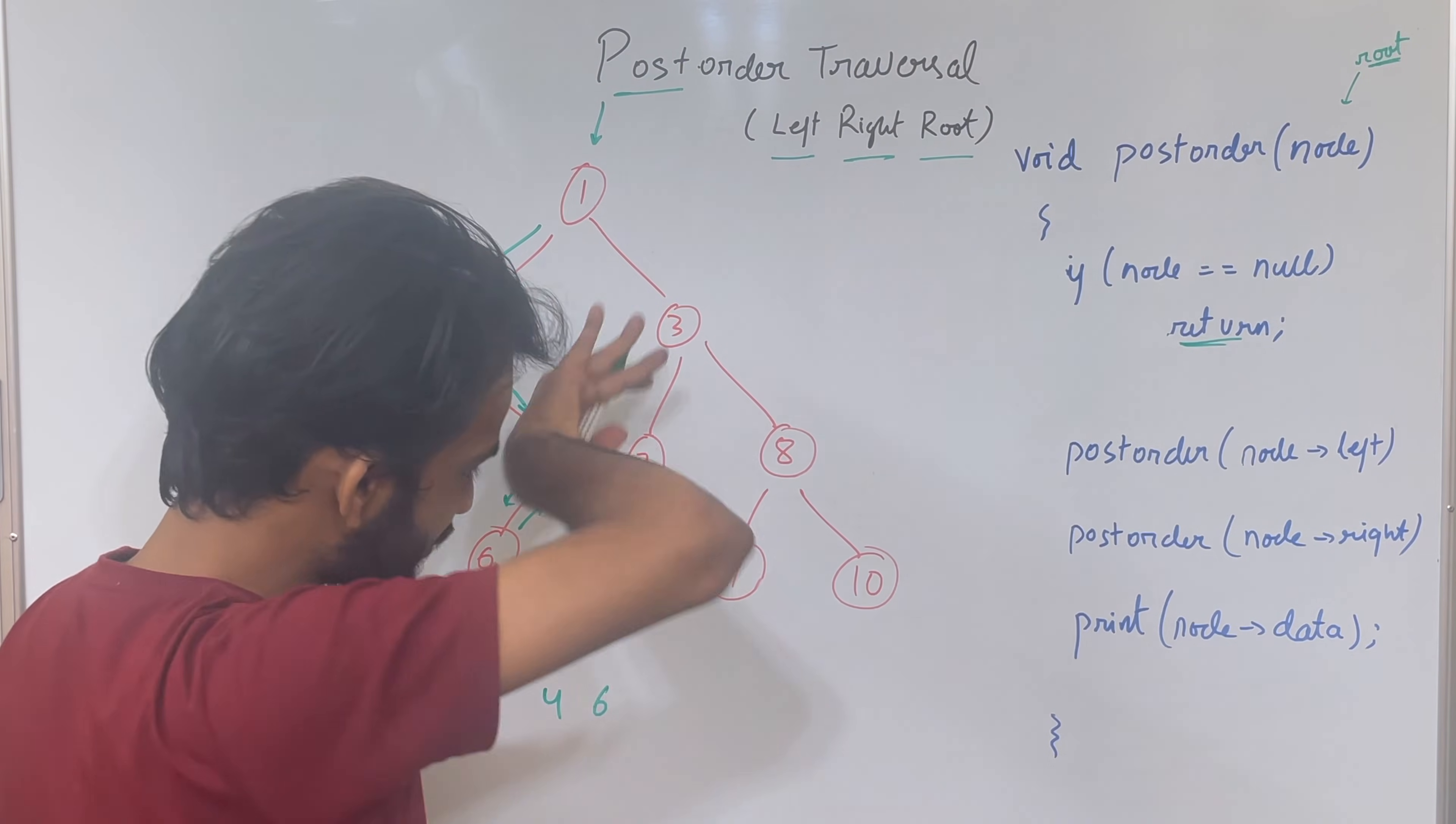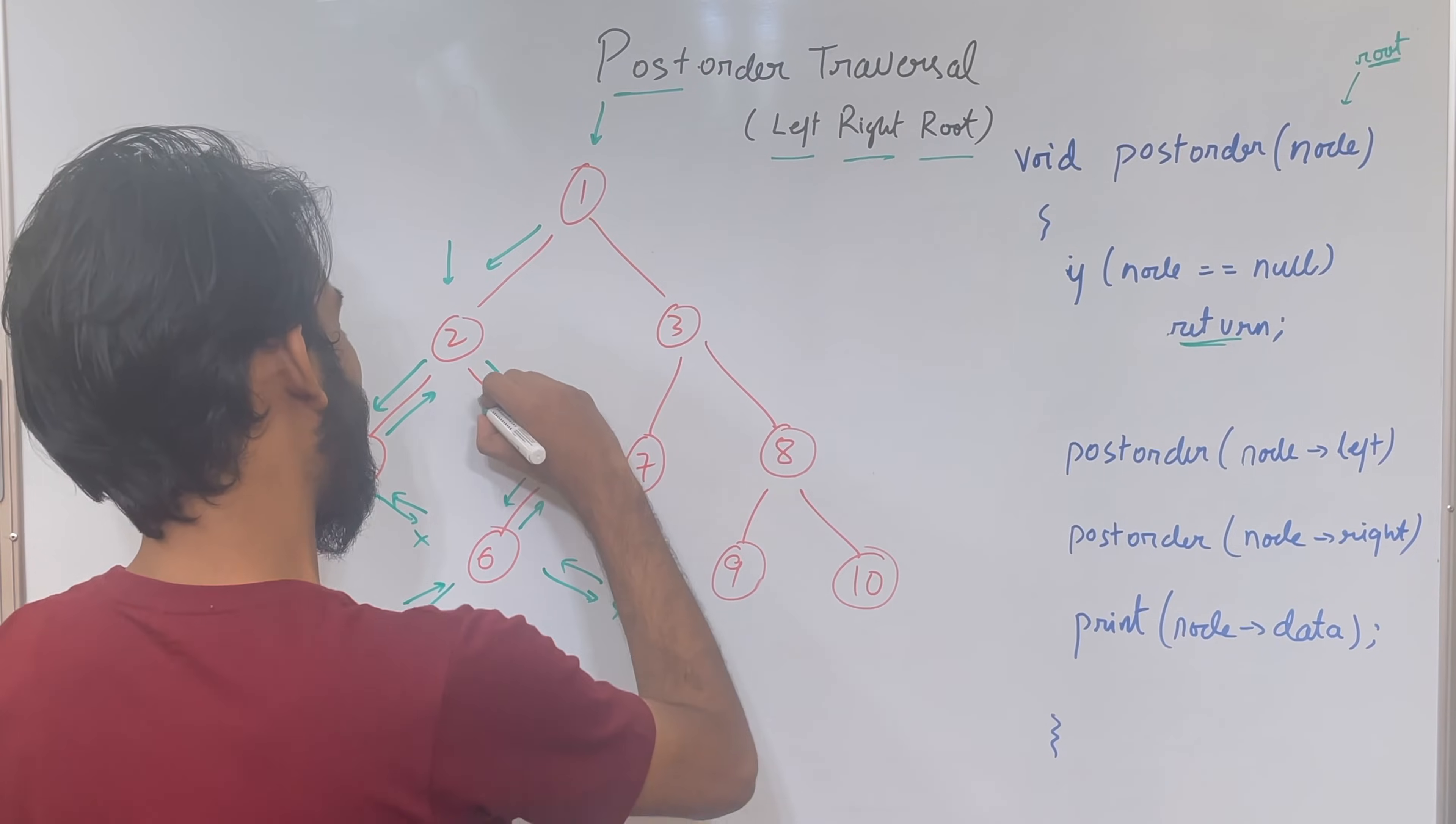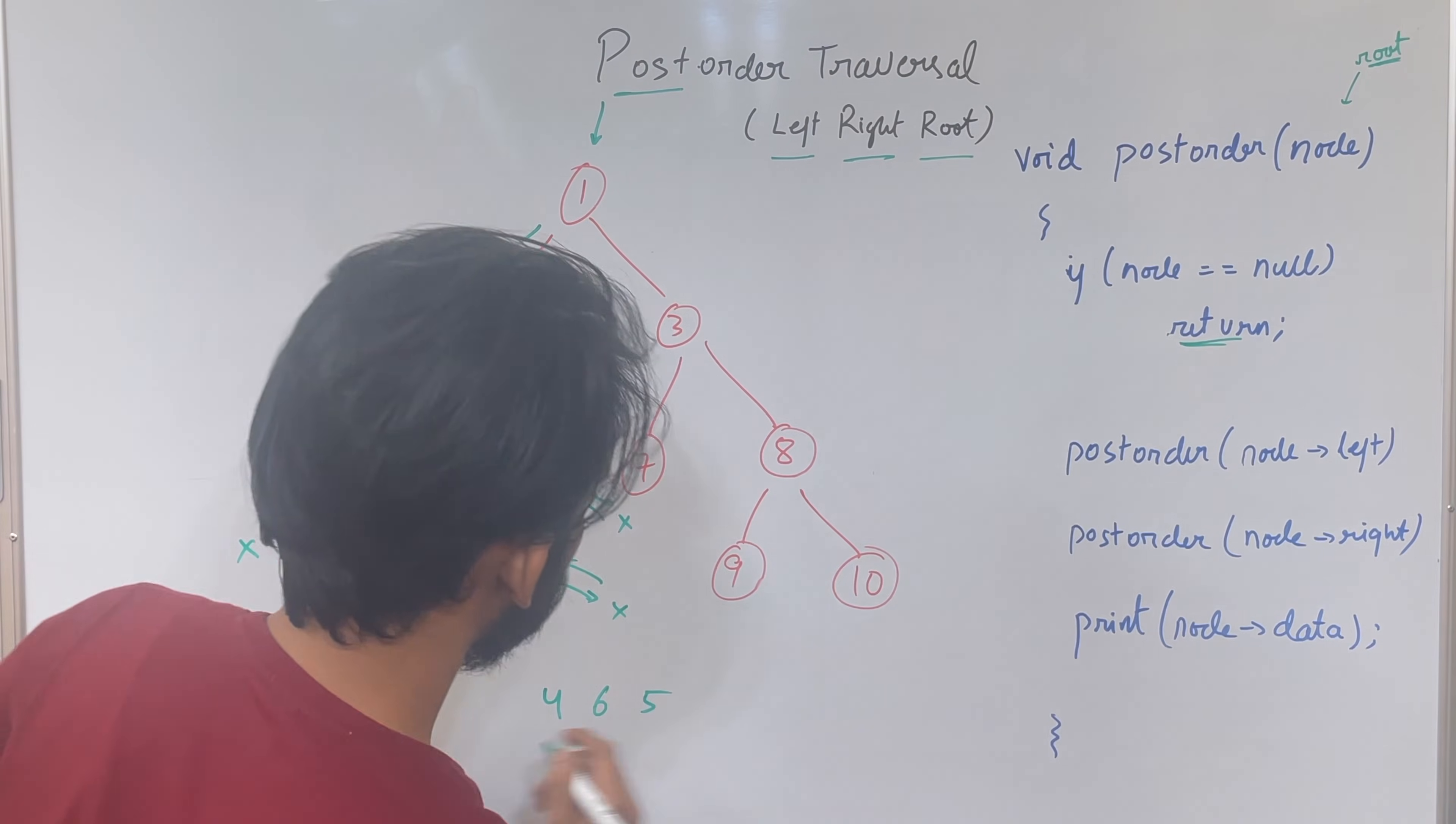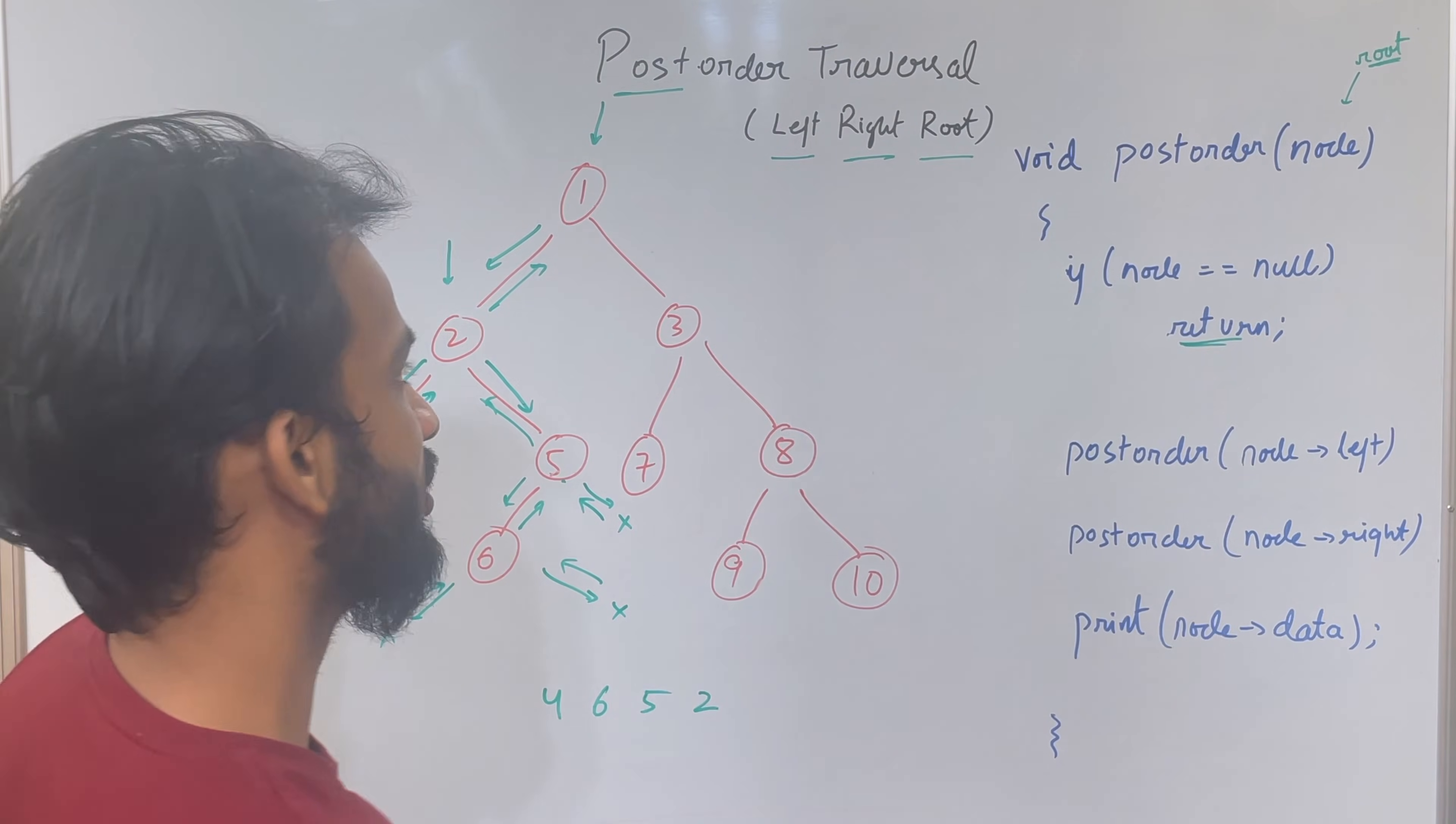And since it has gone, it's time to print it, so I'll print it. So for 5 it's over, go back. When you go back, 2 has gone to the left, 2 has gone to right, it's time to print 2, so please print it. Once you have printed, it's over. So for 1 you have only done the left portion, the right is left. So let's go to the right.